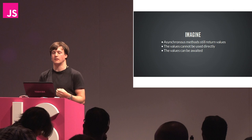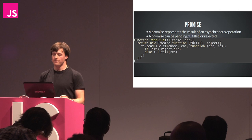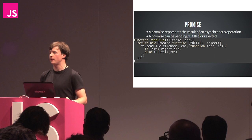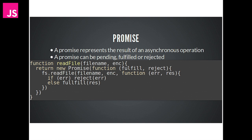Imagine for a moment that asynchronous methods still return values. These values obviously won't be something we can use directly because they have to return synchronously while executing asynchronously, so we don't know what that value represents yet. But we can somehow await it - we can say, tell me when this value is settled. We have such a value in JavaScript - it's called a promise. There are a number of implementations. Q is extremely popular, and I maintain my own promise library called 'promise'. A promise represents the result of an asynchronous operation. It can be pending, fulfilled, or rejected. Every promise starts out pending, then transitions into either fulfilled or rejected - and once it's transitioned, it's immutable.